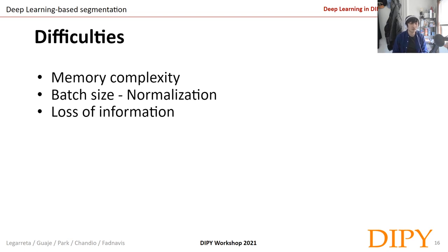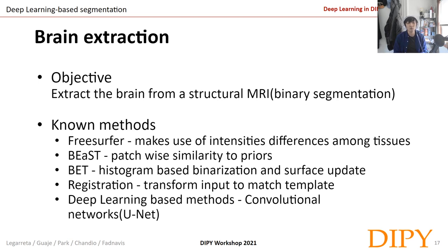These problems set aside, there are solutions as introduced on the data size, and also alternatives to batch normalization like layer normalization or other normalization techniques. One goal in imaging segmentation would be brain extraction, where we aim to extract the brain from a structural MRI — a binary segmentation where we segment one as brain and the other as non-brain. Known methods would be FreeSurfer, which uses intensity differences among grey matter, white matter, and fluid.